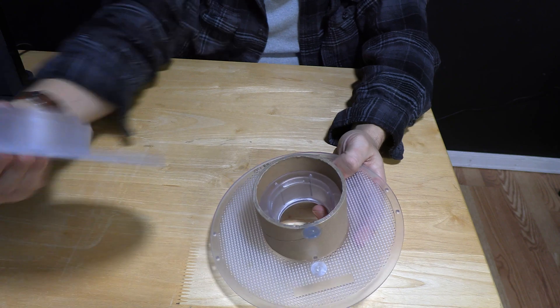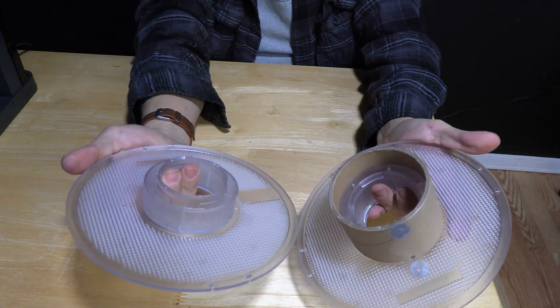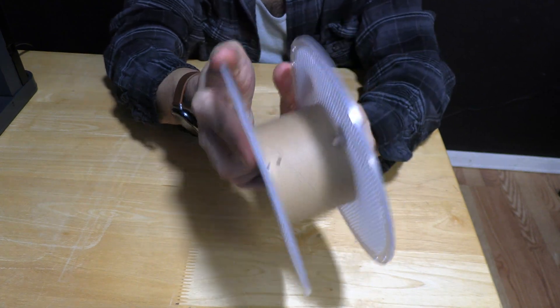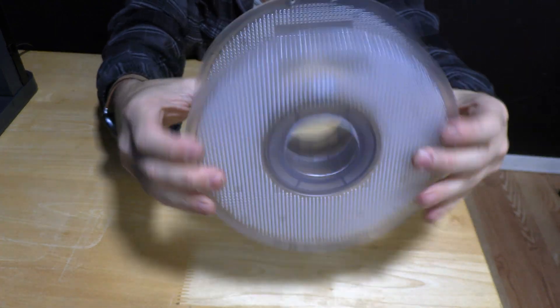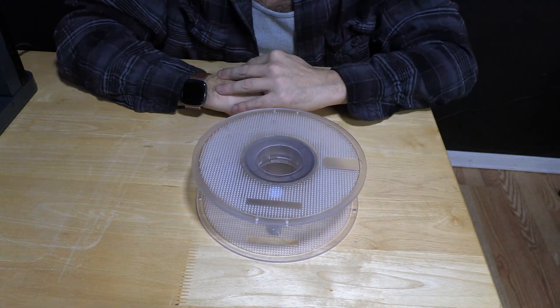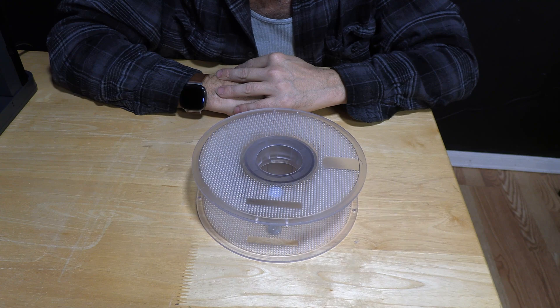Now you can take the other half of the filament spool, push it together and twist in opposite directions until it clips into place and you've successfully refilled your BambooLab filament refill to the reusable spool.